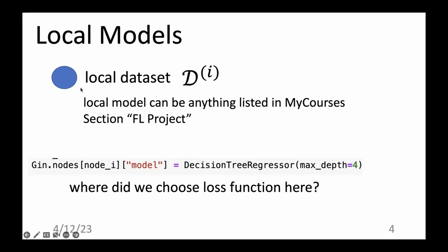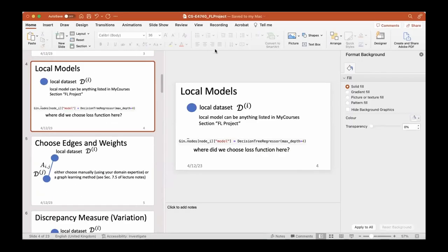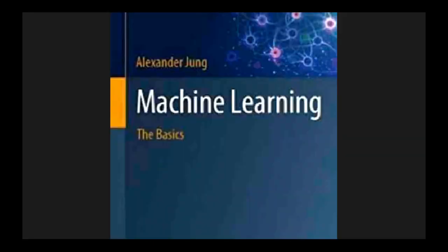Each node in the empirical graph carries not only a local dataset but also a local model. This local model can be anything listed on the MyCourses page. Let me switch to the MyCourses page now.